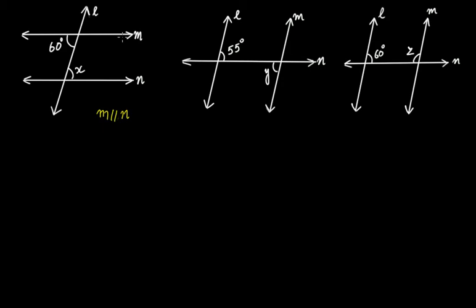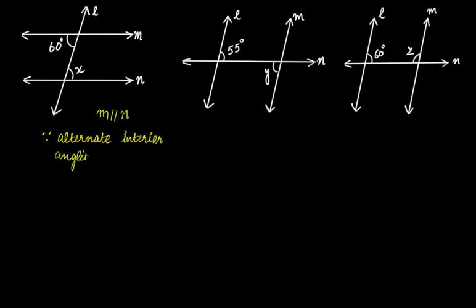Since these two lines are parallel and this is a transversal, the angle of 60 degrees and angle x are alternate interior angles. In the case of a transversal to parallel lines, alternate interior angles are always equal — that is a property of transversal to parallel lines. So since alternate interior angles are equal in this case, x is equal to 60 degrees.